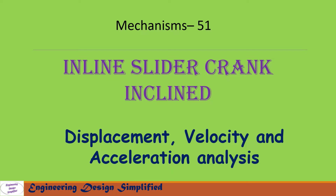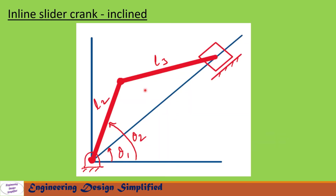In this picture shown is an inclined inline slider crank mechanism. The slider crank mechanism is inclined by an angle theta 1 from horizontal. Link L2 is the crank, link L3 is the coupler, and this is the slider. The crank is at an angle theta 2 from horizontal.